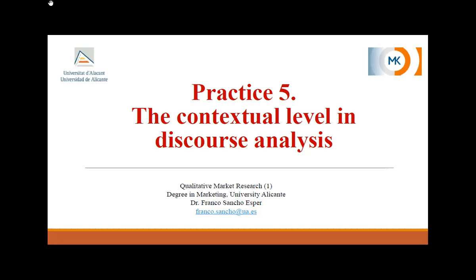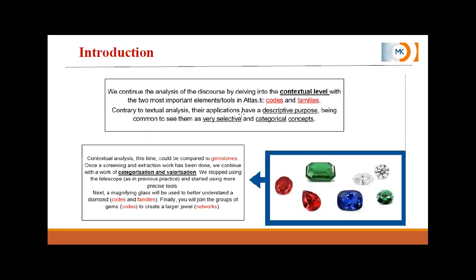These are the codes we are going to use, or similar to these. I'm going to explain later. What we are going to do — I'm going to use an analogy like I used in practice number four. If you remember, in practice number four I explained that the first level of analysis was like an astronomer: the first time, the individual watches the sky without any device, just to identify the main stars.